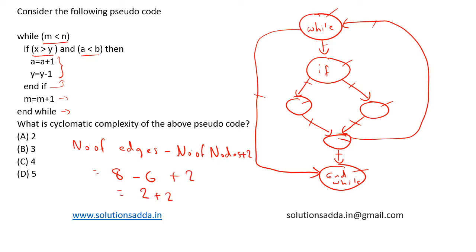Which is equal to 2 plus 2 is equal to 4. So, the cyclomatic complexity is 4.